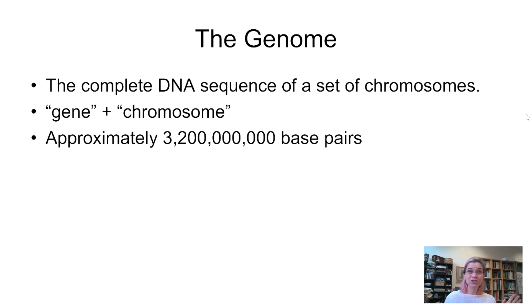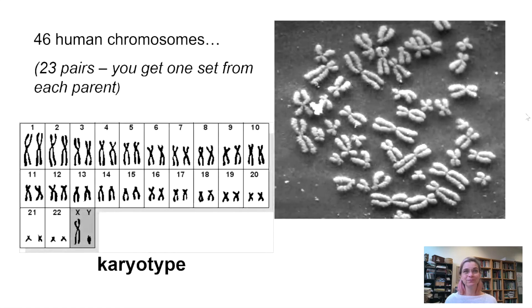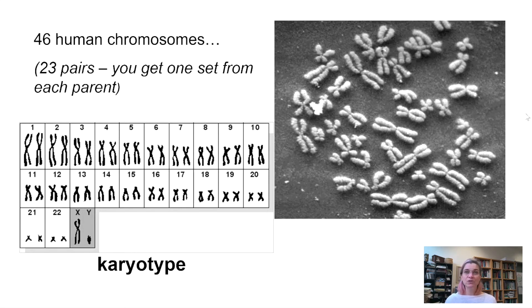Population genetics and genomics are the two types of genetics research that rely intensely on knowledge of base pairs in the genome. The word genome refers to the complete DNA sequence of a set of chromosomes — the term comes from gene and chromosome. Each human has 3.2 billion base pairs in their complete set of chromosomes. People typically have 46 chromosomes that come in pairs — 23 pairs — and you get one part of each pair from your mother and the other from your father. Many people imagine chromosomes looking like two French baguettes tied tightly together in the middle.